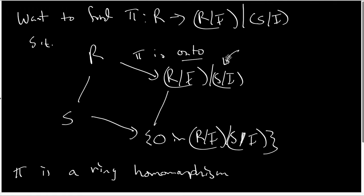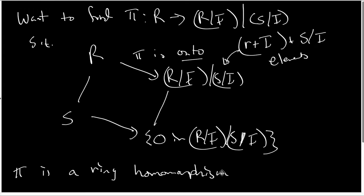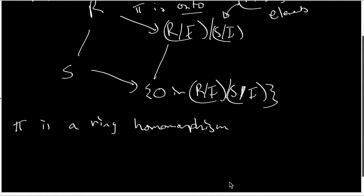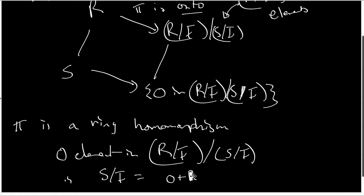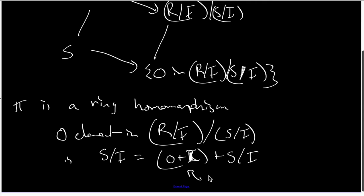The elements of this target ring look like R plus I plus S mod I. The zero element inside this quotient ring is the set S mod I, or we can think of it as the zero in R mod I plus the ideal S mod I. It's important to realize that the zero in R mod I is zero plus I.